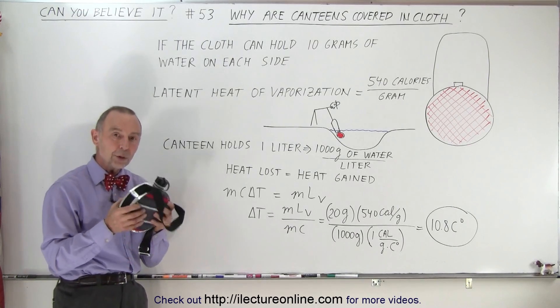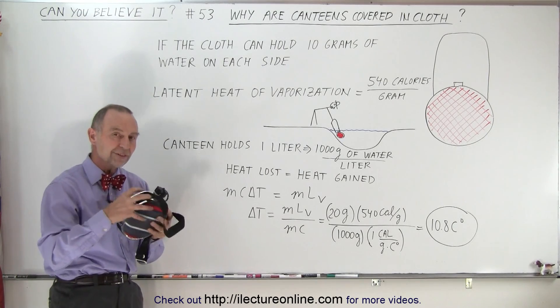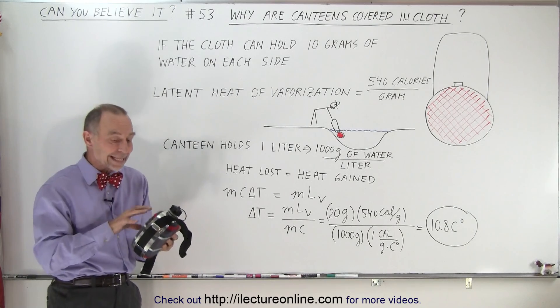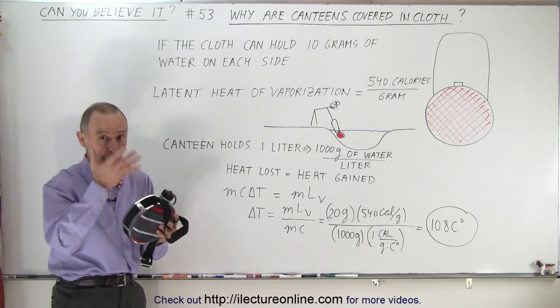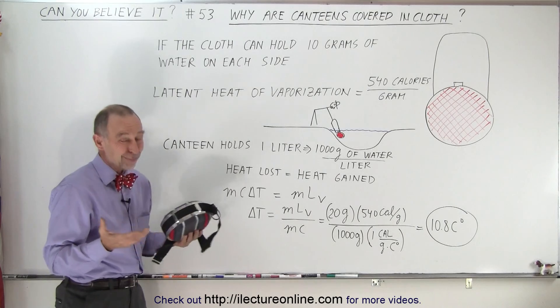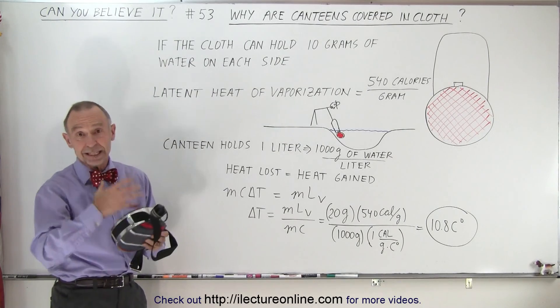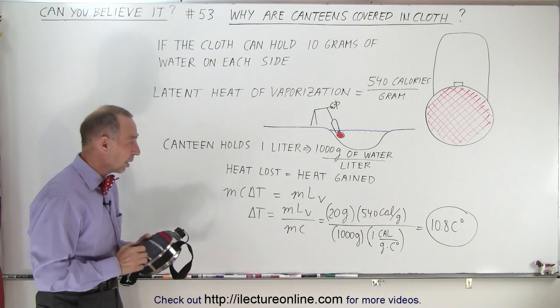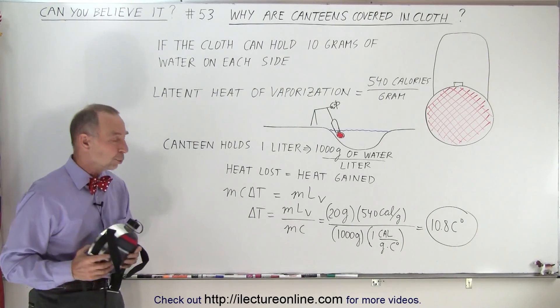So essentially, it's a cooling mechanism to cool the water inside your canteen. Now, we're going to assume for a moment that all the heat came from inside the canteen, so the water cools down. Probably it's only 50% or so, maybe some of the other heat comes from the air, who knows? But if all the heat came from inside the canteen, by how much would the temperature of the water cool down?